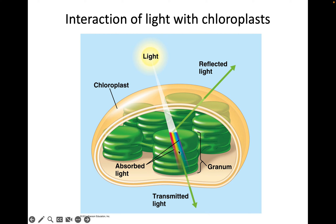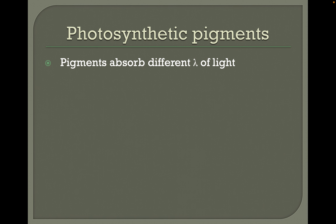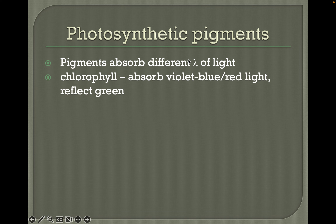When sunlight hits the thylakoids in the chloroplast, some light is reflected — it's the green light that's reflected, which is why plants look green to our eyes. Sunlight also gets transmitted, and some green light comes through as well. Some wavelengths of light actually get absorbed by the chlorophyll pigments on the thylakoid membranes. Chlorophyll absorbs violet and blue and red light; it reflects green. So it's violet, blue, and red wavelengths of visible light that power photosynthesis.